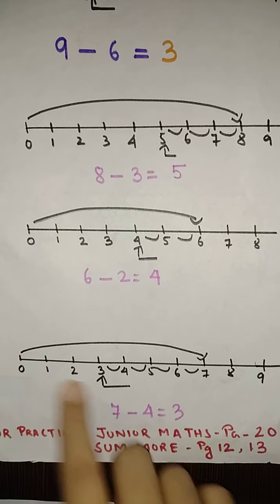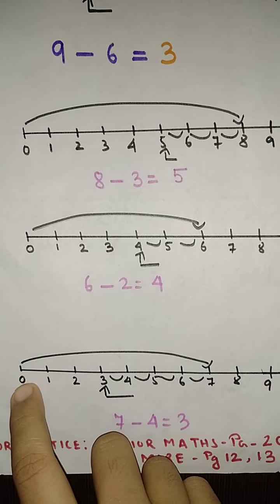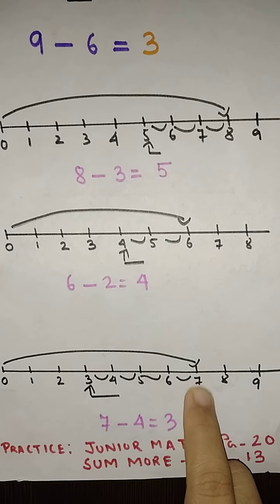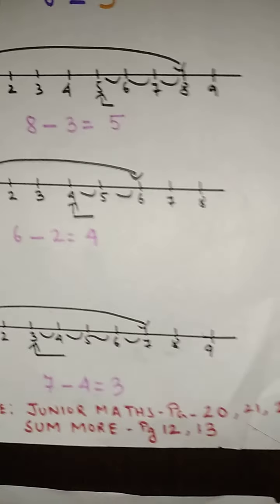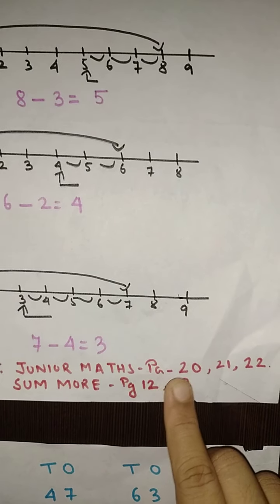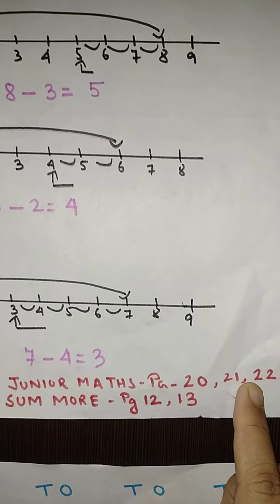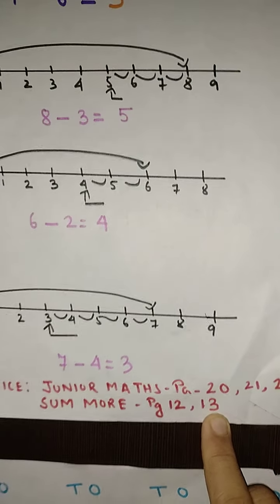And the last one is 7 minus 4. So I have started my big arrow starting from 0 and it has ended at 7, then 1, 2, 3 and 4. So 3 is my required number. And for this practice work you will open your junior math book page number 20, 21 and 22 and for some more book page number 12 and 13 and you will be solving this type of subtraction on number line.